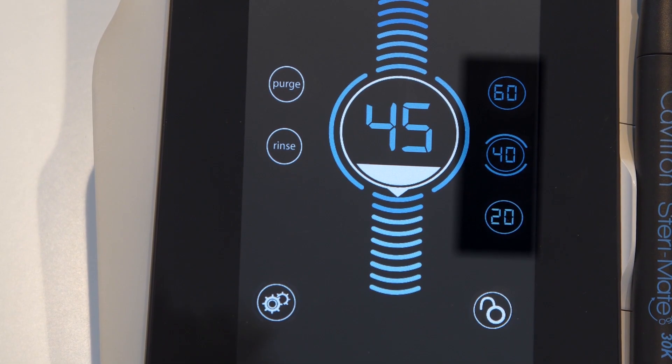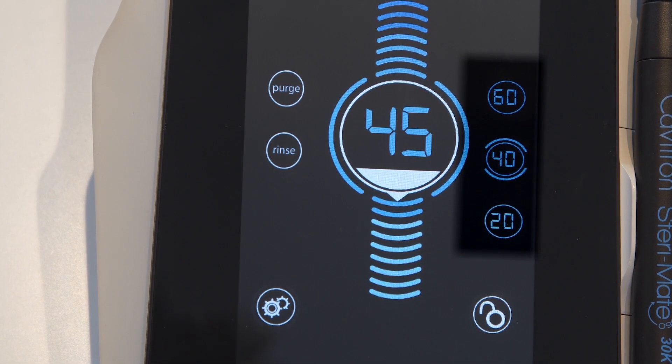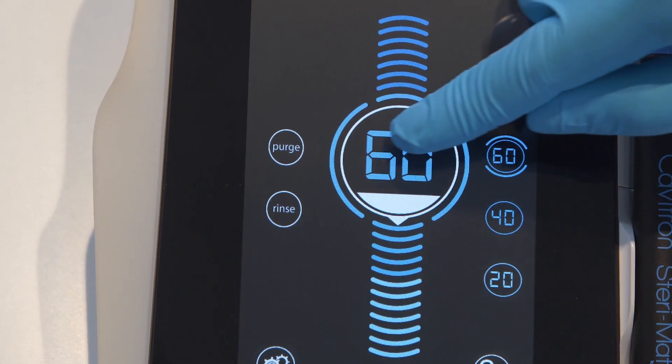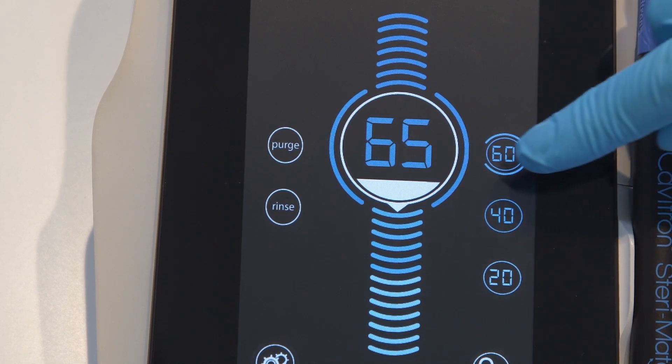The right side of the screen contains three preset power settings that come factory set to 20, 40 and 60. However, these can be reset to any level desired.